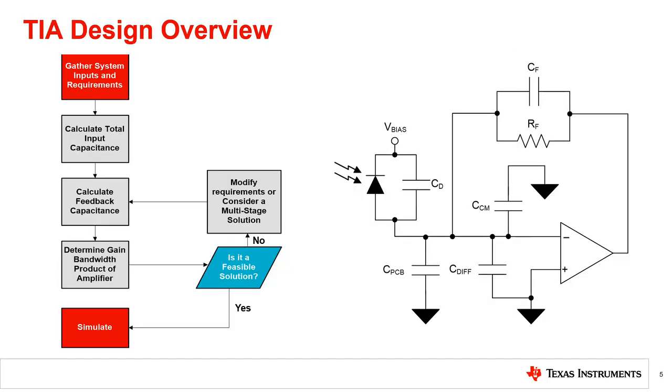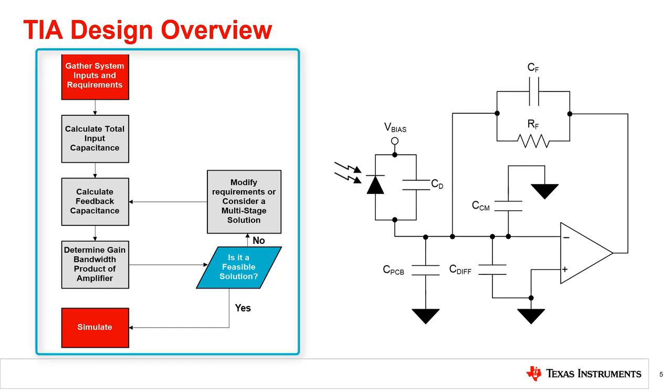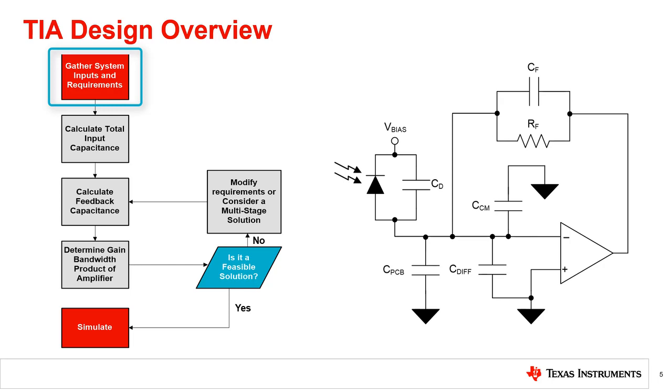In most practical situations, a list of system-level performance requirements is what leads to choosing the best suited amplifier. This flow chart outlines a simple approach to determine the right TIA for your application. The first step is to gather your system inputs and requirements, such as the transimpedance gain, the capacitance of your chosen photodiode, and the bandwidth of the system.